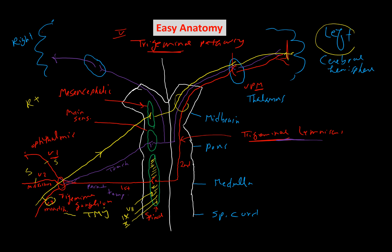The glossopharyngeal nerve also brings sensation to the spinal trigeminal nucleus, and the vagus nerve brings general sensation to the spinal trigeminal nucleus as well. So while it is called the trigeminal nucleus, it also receives pain and temperature from the facial area via the facial nerve, from the pharyngeal area via the glossopharyngeal nerve, and from the larynx via the vagus nerve. This is what we call the trigeminal pathway — how facial sensation reaches the cerebral hemisphere, specifically the lower part of the post-central gyrus.